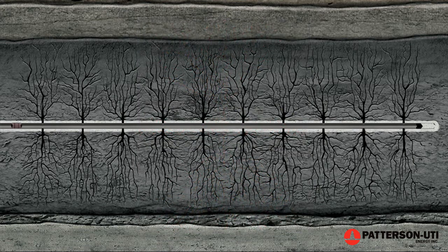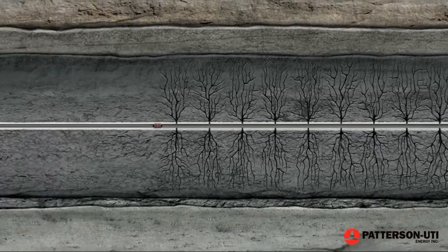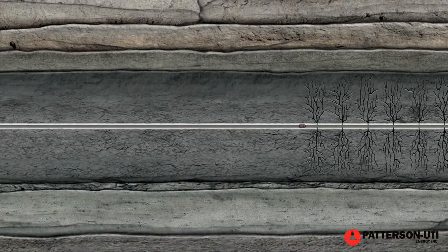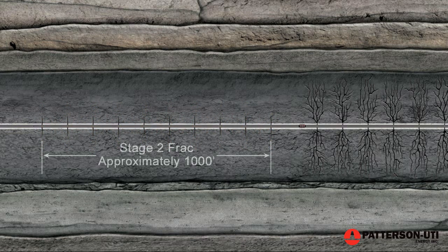Next, a temporary plug is placed at the heel or left side of the first stage frack. The plug closes off or isolates the perforated and fracked section of the wellbore so that the second stage section of the horizontal leg can be perforated and fracked.